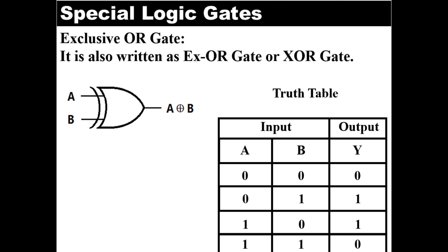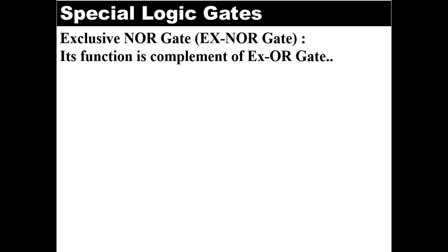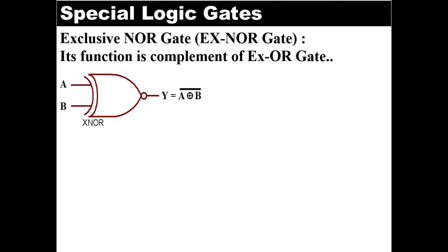Now let's see our second special gate, that is XNOR gate, which is also known as exclusive NOR gate. It is a digital logic gate whose function is the logical complement of XOR gate. Its two-input version implements logical equality, so it is also called an equivalence gate. Its output will be high or 1 only when both inputs are equal; otherwise for unequal inputs its output will be 0. Hence it is called the complement of XOR gate as its output is exactly opposite to the XOR gate. XNOR gate is a combination of XOR gate and NOT gate — that is, the output of XOR gate is connected to the input of NOT gate.